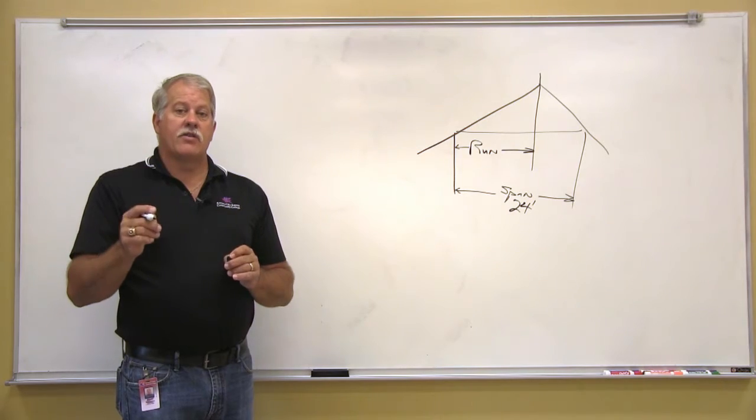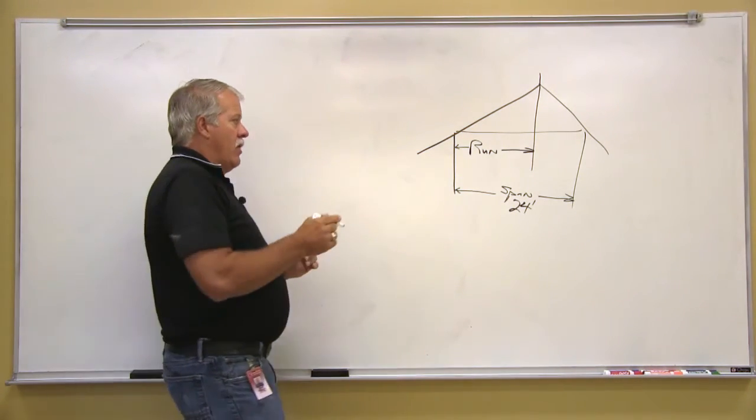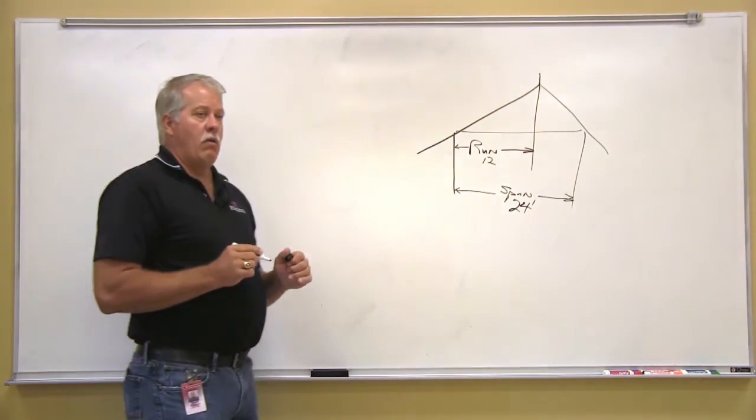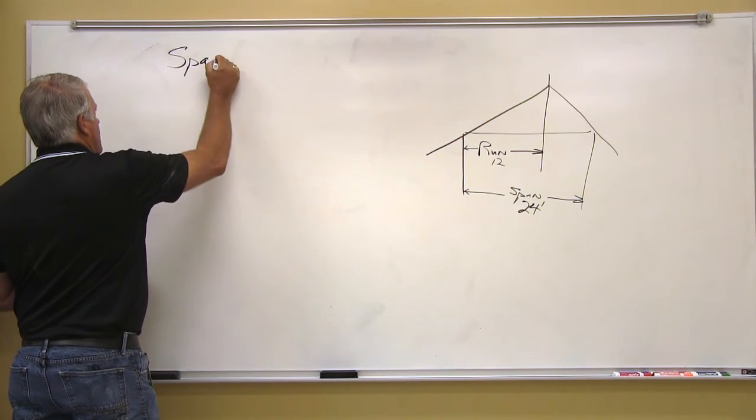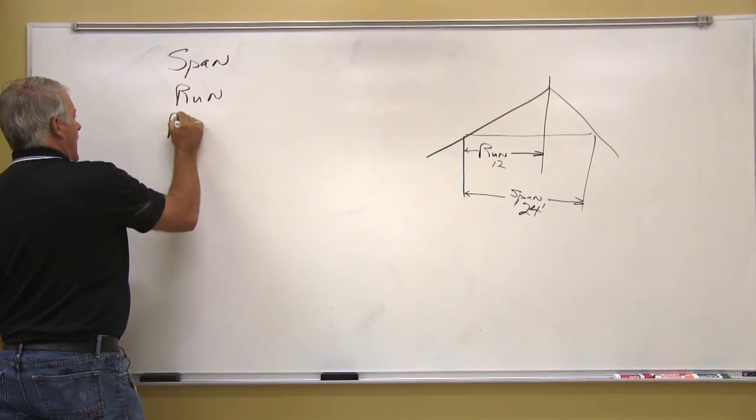The run is always one half the span. So in this case our run is 12 feet or 12. So key points that we need to think about: span, run, and rise.